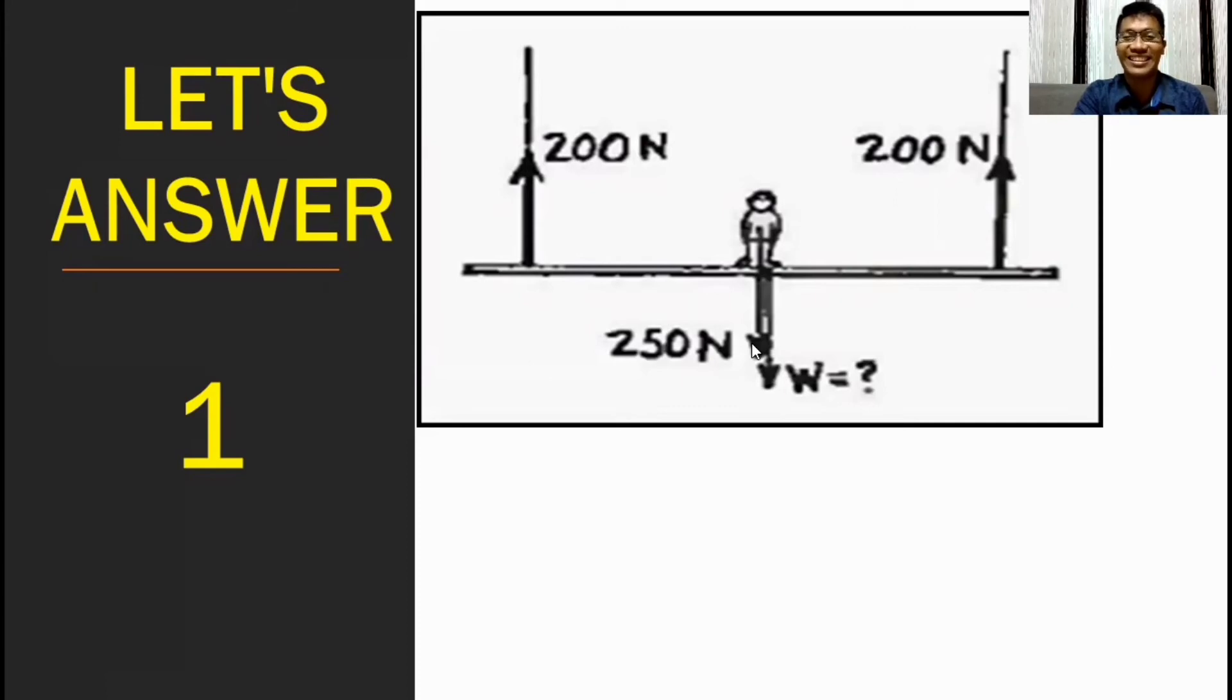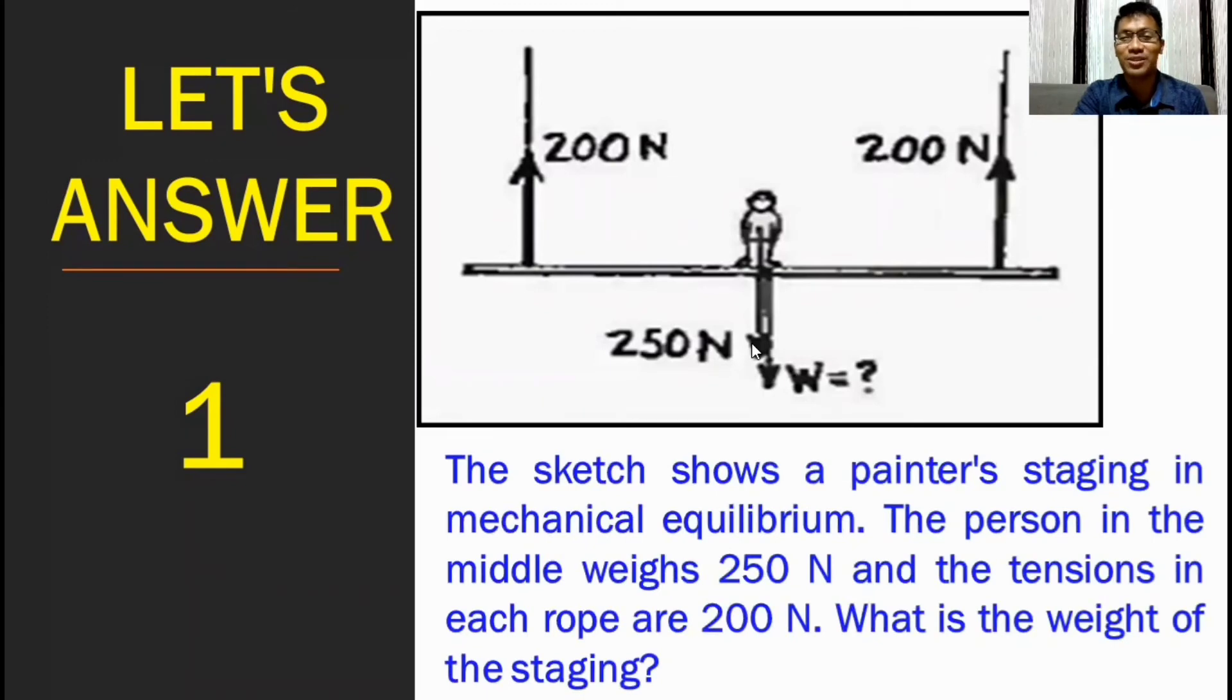Let's try to answer this. The sketch shows a painter's staging in mechanical equilibrium. The person in the middle weighs 250 newton and the tensions in each row are 200 newton. So what is the weight of the staging? As you go through with this chapter, you would learn that the tension and weight are examples of forces. So in this problem...